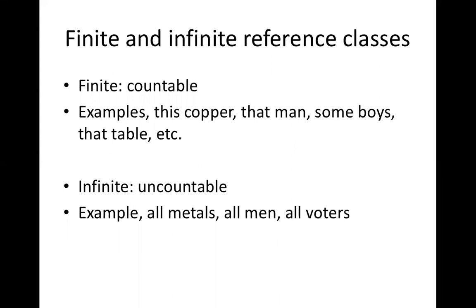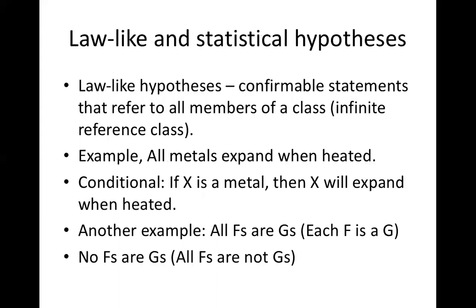Now let's make another distinction we have seen already — between finite and infinite reference classes. The finite reference class is the class of countable items: examples include 'this copper,' 'that man,' 'some boys,' 'that table.' The infinite reference class is the class of uncountable items: examples include 'all men,' 'all metals,' 'all voters,' and so on.